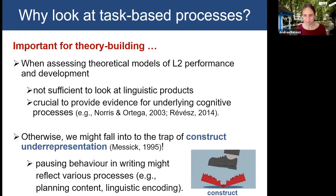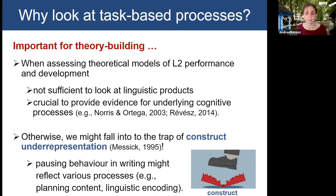To give you an example relevant to today's talk: when a second language writer pauses while composing an essay, it might reflect a number of underlying cognitive processes. For example, it might be associated with problems not knowing what to say, or struggling with linguistic encoding processes such as looking for the right lexis or grammatical construction. For building and testing theoretical models of second language writing, it makes a significant difference which of these two processes underlies a pause produced by the writer.